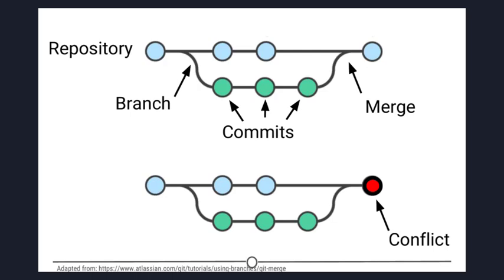Staging allows you to separate your file changes into separate commits and that is very helpful. To summarize these commonly used terms: files are hosted in a repository that is shared online with collaborators. You pull the repository's contents so that you have a local copy of the files that you can edit. Once you are happy with your changes to a file, you stage the file and then commit it.